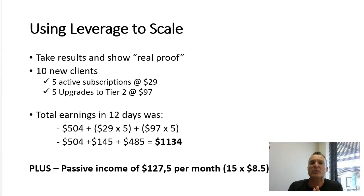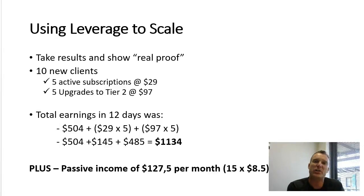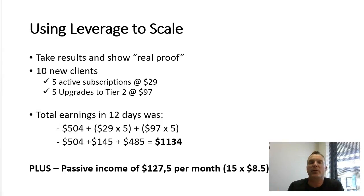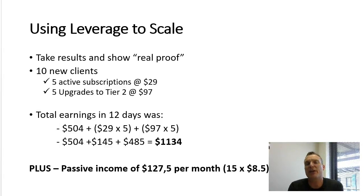I said right, I've chosen a product, promoted it, and got some success. Then I used something called leverage. I now had credibility when I created Facebook posts — I could say 'I've got this amazing tool and by the way it's made me $600 within the first four days of using it.' The response was great because now you've got proof with screenshots. In the next week I signed up a further ten clients. The program has two levels: an active subscriber pays a monthly fee, and there's a tier-two upgrade for $97.